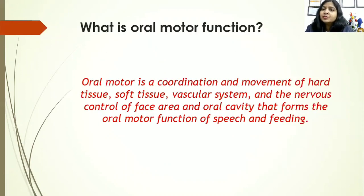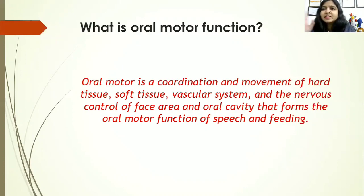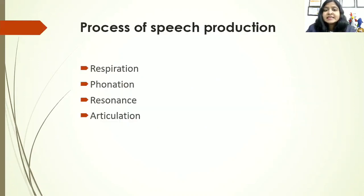What do we understand by oral motor function? Oral motor is a coordination and movement of hard tissue, soft tissue, vascular system, and the nervous control of the face area and oral cavity that forms the oral motor function of speech and feeding. All of them work together along with vascular and nerve supply to form the oral motor function. If anyone has any problem, it will be an oromotor problem.